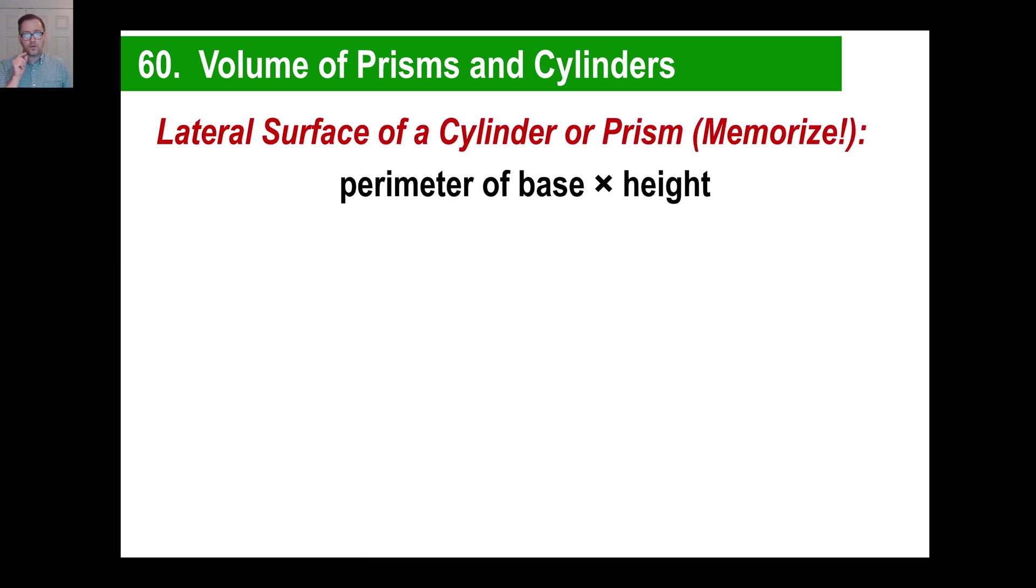Second thing you need to memorize is lateral surface area of a cylinder or a prism. You just need to memorize this. Now, lateral surface area means the surface area of the sides of a prism or a cylinder. That's it. Not the top, not the bases, just the lateral, just around that prism or cylinder. And the way you do that is you figure out the perimeter. You know what perimeter is, right? The distance around something. All you do is find the perimeter of the base and multiply it by the height. That's it. That's all you need to do. So pause if you want to write that down.